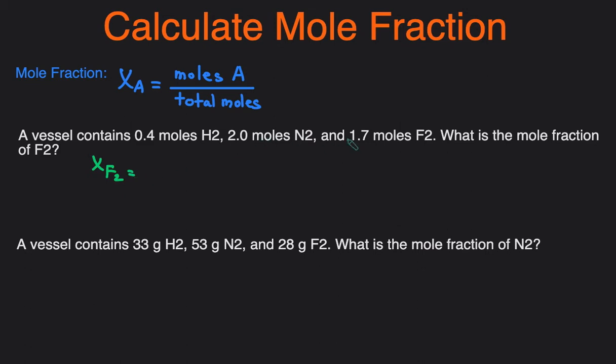So all we have to do is just take the moles of F2, 1.7 moles, divided by the total moles. So total moles will just be all these three added together, 0.4 plus 2 plus 1.7, and that'll give us 4.1 moles.